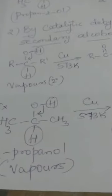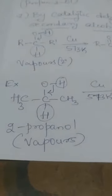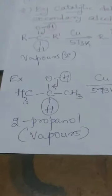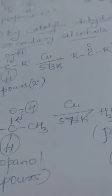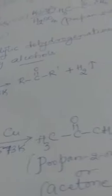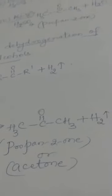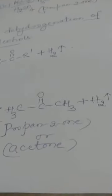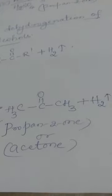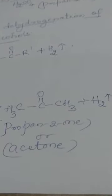If you take the vapors of propan-2-ol and pass over a copper catalyst at 573 Kelvin, the product obtained will be propan-2-one with the elimination of H2. This is the second method of preparation — catalytic dehydrogenation of secondary alcohols.